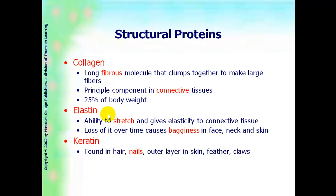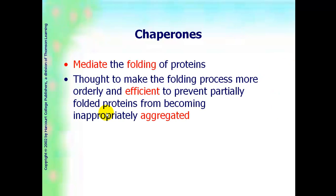And then keratin, which is found in our hair, nails, outer layer of skin, and then in animals, feathers, and claws. Chaperones mediate the folding of proteins, and they are still studying this, but they believe that there are proteins called chaperones that are kind of making sure that the proteins are all not becoming complicated, aggregated, mixed up together.